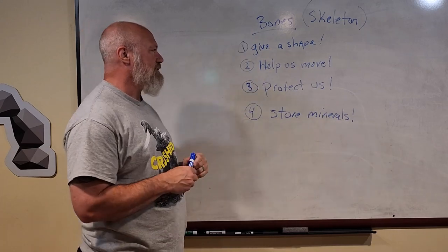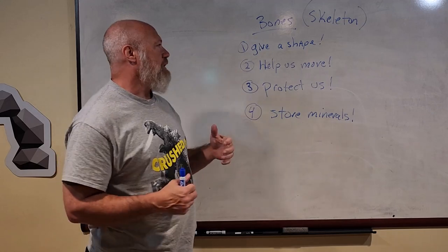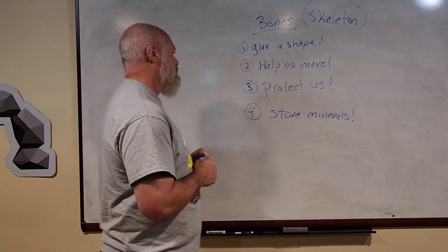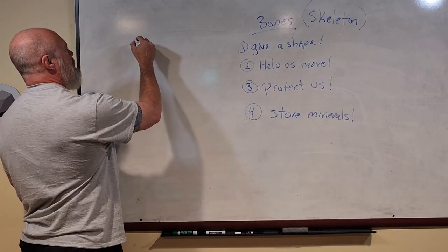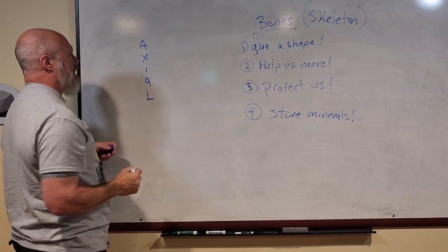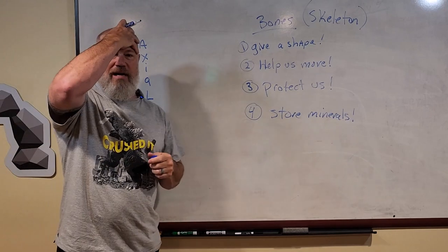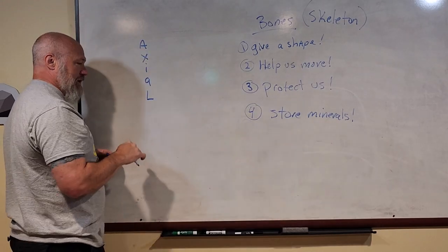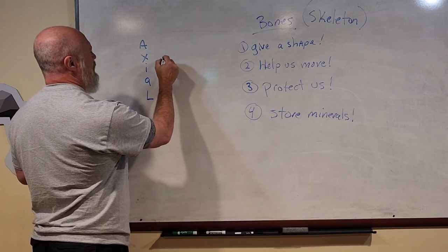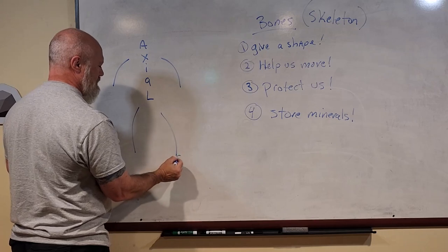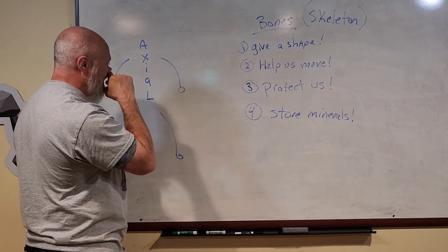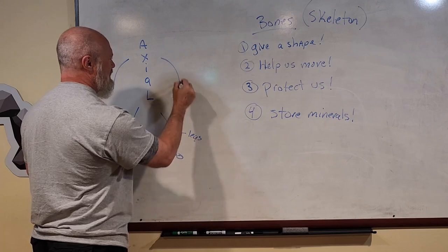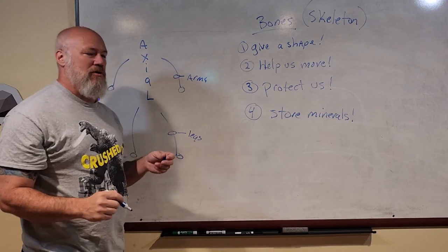So those are the things bones do. You have over 200 of them. Now let's talk about how your skeleton is organized — you have really two parts. The first is the axial skeleton, which runs right down the middle: your head, torso, backbone, and ribs — like an axle on a car. Then there are parts hanging off that axial skeleton, which are your arms and legs, or upper and lower limbs.